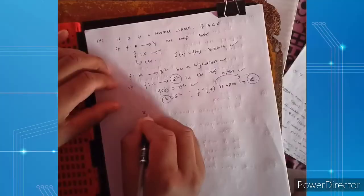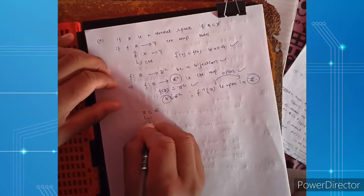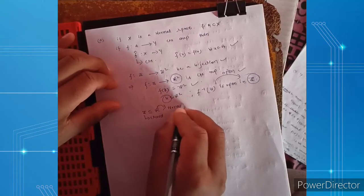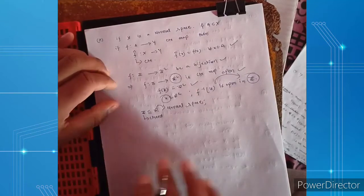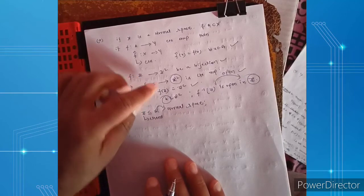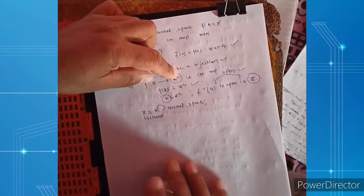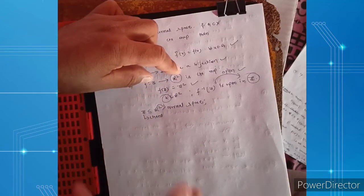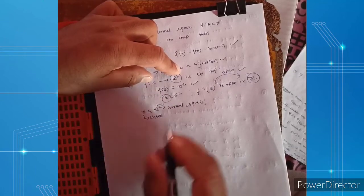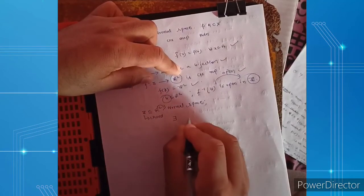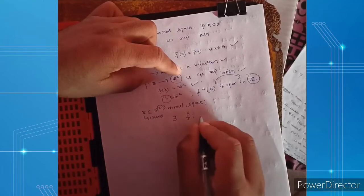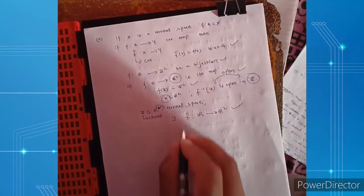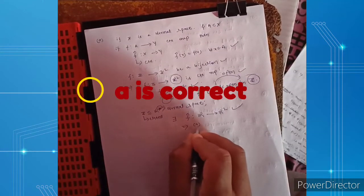So f is a continuous map. Z as a subset of R is closed, and R is a normal space. Since f from Z to R² is a continuous map, by the Tietze extension theorem there always exists a continuous extension f̂ from the whole space R to R². So the first statement is true.